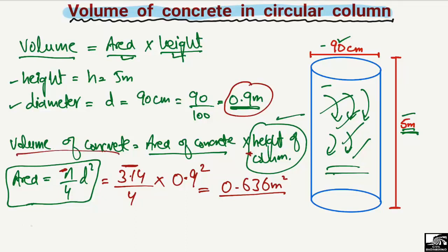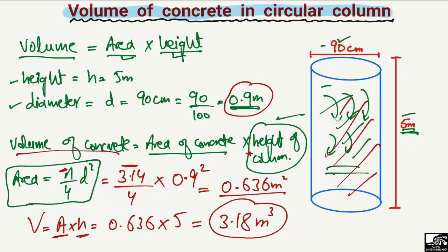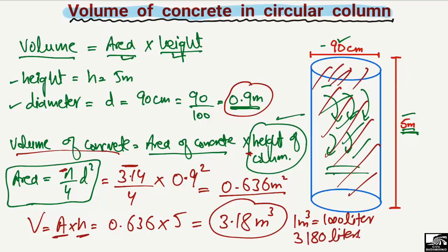The volume of the concrete will be area multiplied by height: 0.636 × 5 meters = 3.18 cubic meters. We got the volume of concrete in this column as 3.18 cubic meters. If we convert this to liters, one cubic meter equals 1,000 liters, so this gives us 3,180 liters of concrete required for this column.